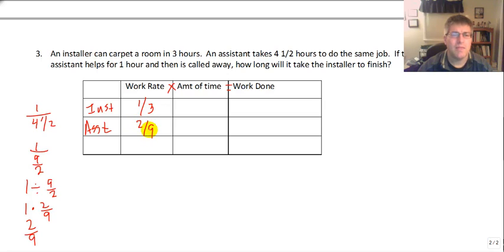And if you think about it, that makes sense. Didn't we say it takes him 4 and a half hours to complete one job? If you go back to what we talked about earlier, if it takes 4 and a half hours to complete one job, doesn't it take 9 hours to complete two jobs? So 9 hours to complete two jobs is the same work rate as 4 and a half hours to complete one job. Now, the assistant is going to help for an hour and then is called away. So the assistant works for one hour on this particular job. The installer is working for one hour as well, but he keeps working.